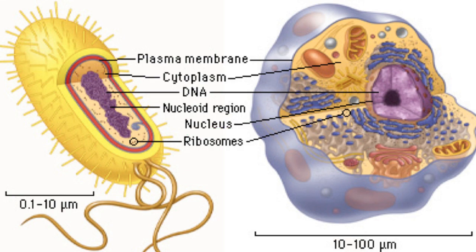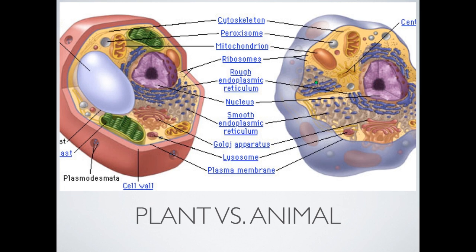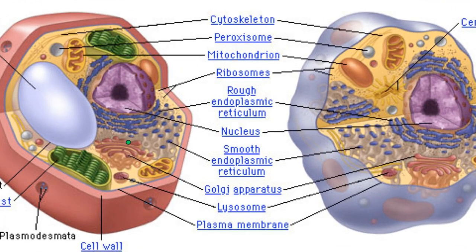Now let's talk about eukaryotic cells and divide them into two categories: plants versus animals. Students often get confused about the differences between the two. Both of these are eukaryotic cells — you can see all of those membrane-bound organelles, a true nucleus, and a plasma membrane. The first major difference is that the plant cell has a cell wall surrounding the outside, which is made up of a carbohydrate called cellulose. It's a structural carbohydrate and we do not find that in animal cells.